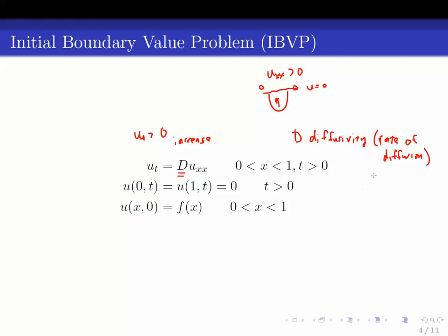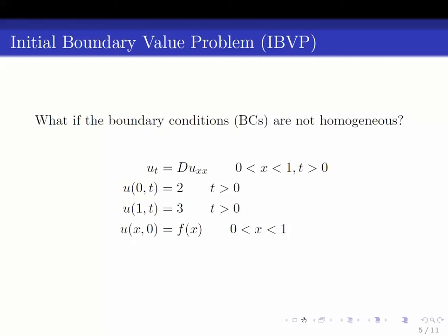What if the boundary conditions are not homogeneous? We'll delve into this more deeply later, but keep in mind we are going to look at sums of solutions — linear combinations of solutions. If you take a linear combination of solutions, say u and v, the derivative operator is linear, so you would have ut plus vt equal to D times the second derivative, which is also linear and distributes across u and v.